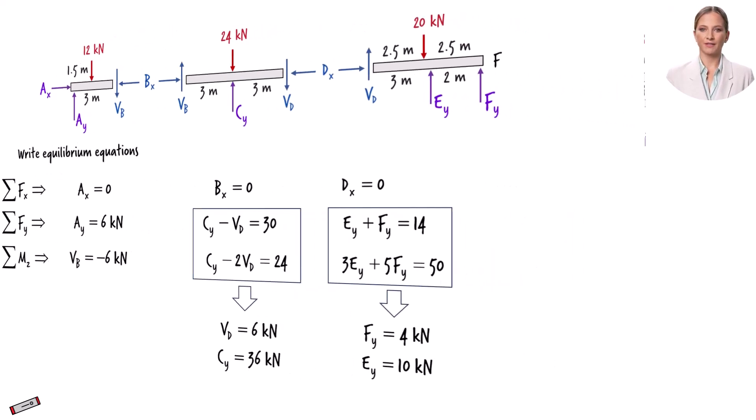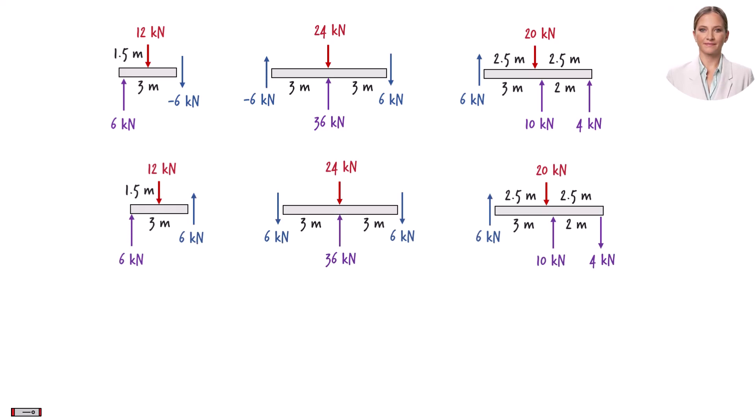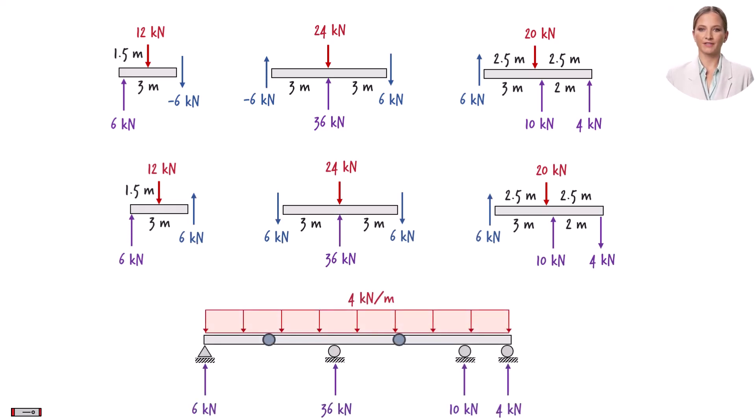Let's show the calculated forces on the free body diagram. Note the shear force with the negative magnitude. We can reverse the direction of the force, then remove the negative sign like this. So, here are the support reactions for the beam.